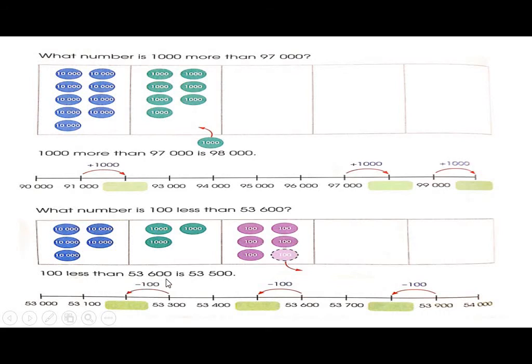What number is 100 less than 53,600? 100 less than 53,600 is 53,500. Now we have started here, which means we start from 53,600. 53,100, 53,200. We will go towards negative, minus. 53,200, 53,400, 53,500, 600, 700, 53,800. Here we have 53,800. This was our small number pattern.